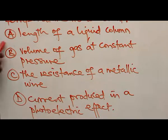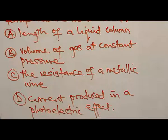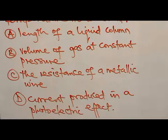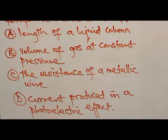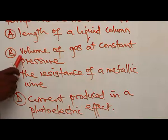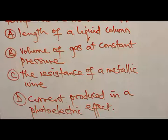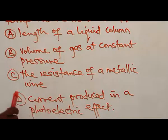Option A is correct because the length of the liquid used in the thermometer is proportional to the volume, which changes uniformly with temperature. Option B — the volume of gas at constant pressure varies directly with absolute temperature, so it can be used to measure temperature. Option C — the resistance of a metallic wire, like in a platinum resistance thermometer, varies uniformly with temperature and so can also be used.